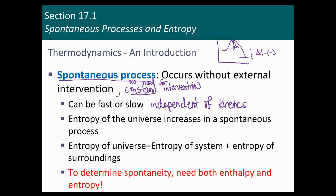To determine spontaneity, we need both enthalpy and entropy. We need both delta H and something called delta S. Just because a process is exothermic doesn't mean it's spontaneous, and endothermic processes can also be spontaneous. What factors in will be the entropy component.